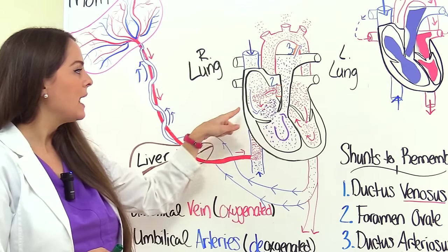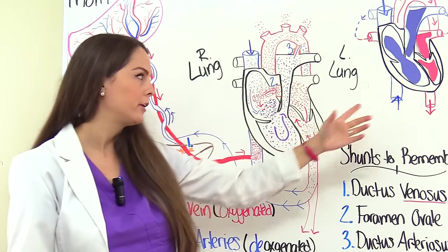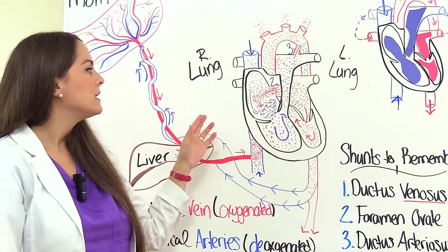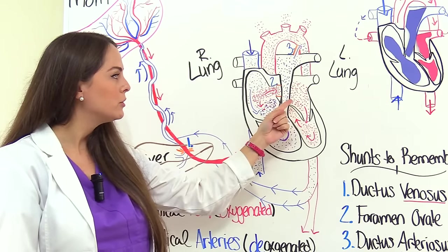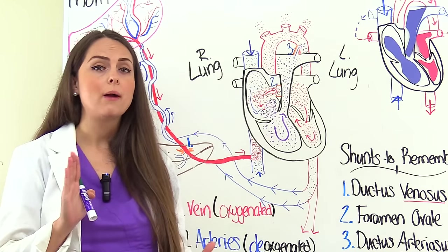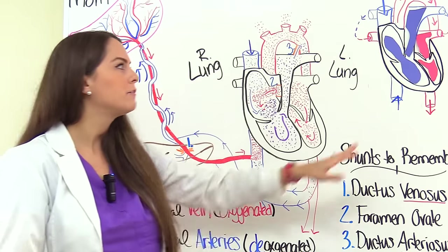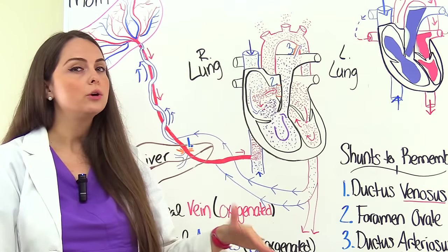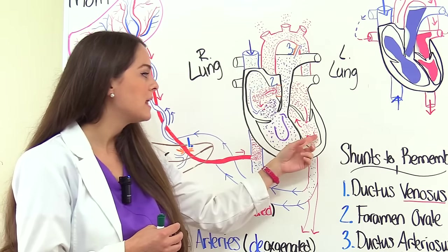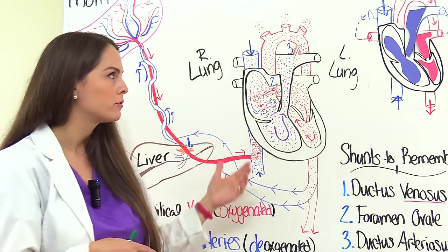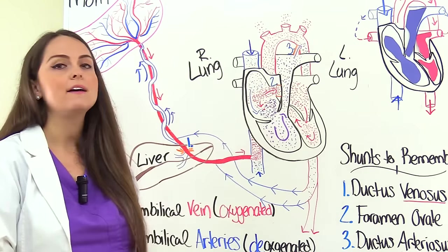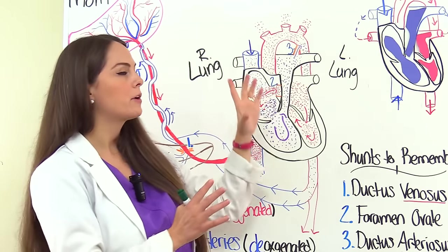This blood flows up and enters the right atrium. Now something really interesting happens here: most of this rich oxygenated blood actually flows over to the left side via the second shunt — the foramen ovale — which connects the right atrium to the left atrium. Remember, the right side's normal job is to send deoxygenated blood to the lungs, but the lungs aren't working here. So we take this fresh oxygenated blood from mom and get it to the left side, which will pump it to the body. It goes into the left atrium, down into the left ventricle, up through the aorta to replenish the body.